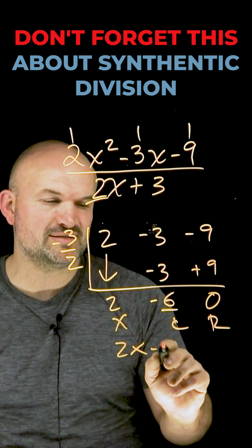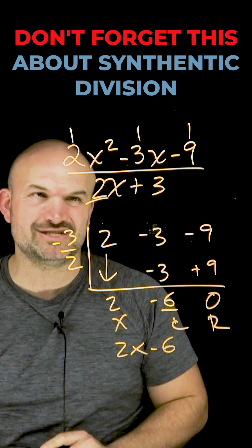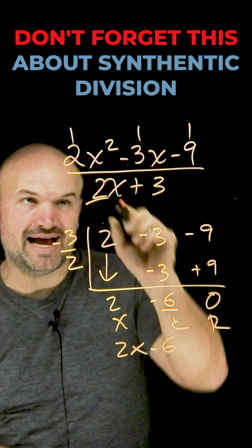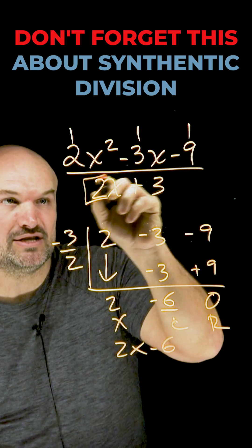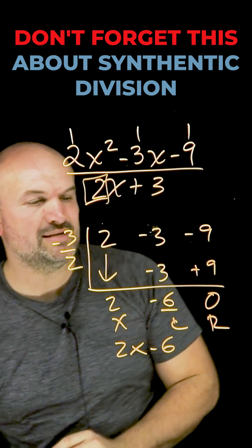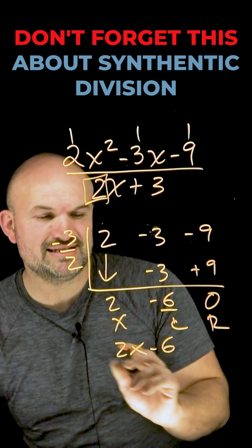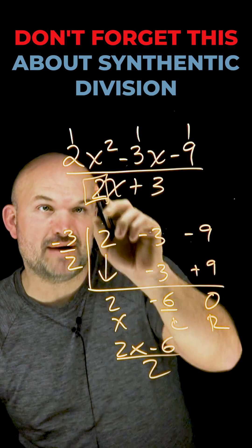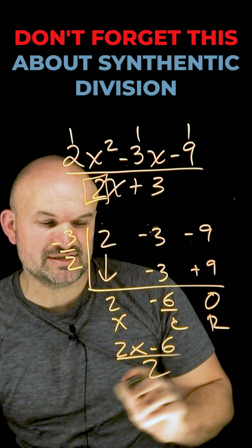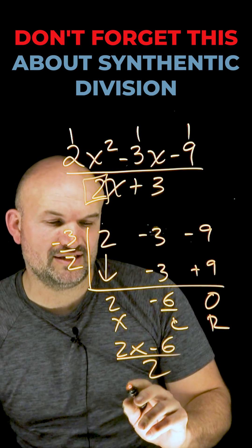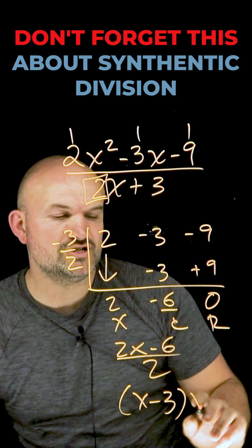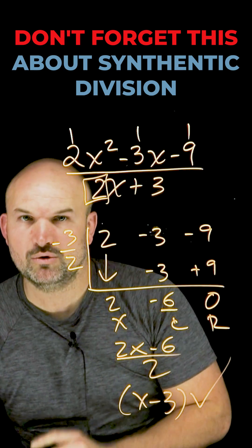Some students will think the answer is 2X minus 6. But ladies and gentlemen, that cannot be my final answer — I have to remember this 2. So what we're simply going to do is take 2X minus 6 and divide it by that coefficient, leaving us a final answer of X minus 3, which is going to be our quotient.